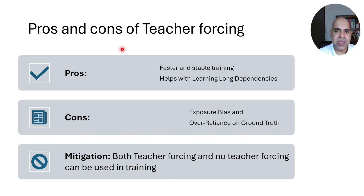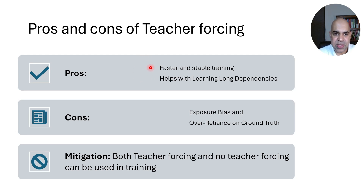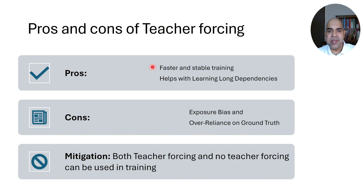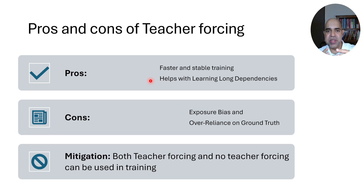Now let us discuss some pros and cons of teacher forcing. In terms of advantages, teacher forcing helps the model converge faster during training because it provides the correct input at each step. This reduces the chances of compounding errors, where a mistake made early in the sequence influences subsequent predictions — that is, teacher forcing reduces error accumulation. Also, teacher forcing helps learning long dependencies: for long sequences it ensures the model sees the correct context at each step, which helps the model learn relationships across long distances in the sequence.